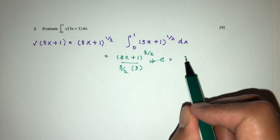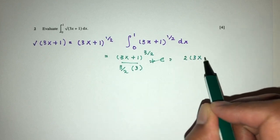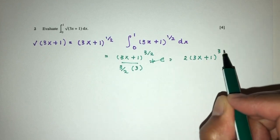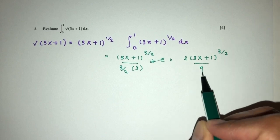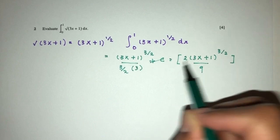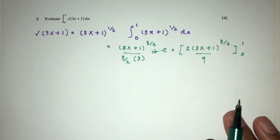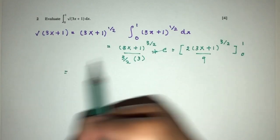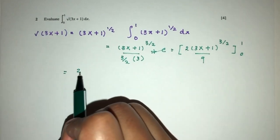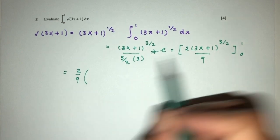And let's simplify this. That will be 2 here, 3x plus 1, 3 over 2, 9 and the limit is 1, 0. Now step by step, I can take out these 2. 2 over 9 will be outside and the inside I can solve.